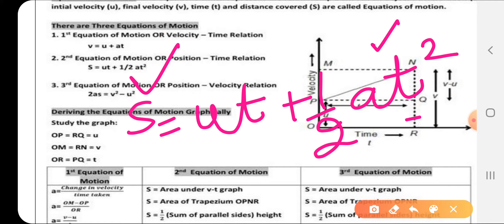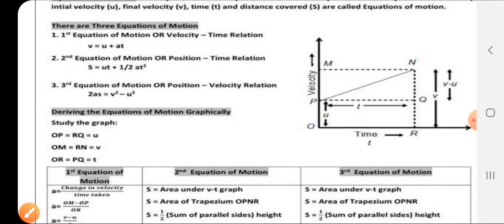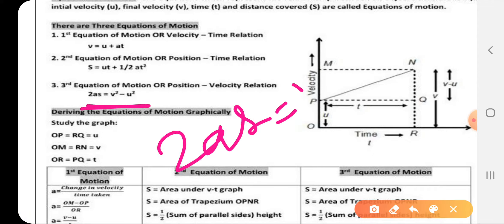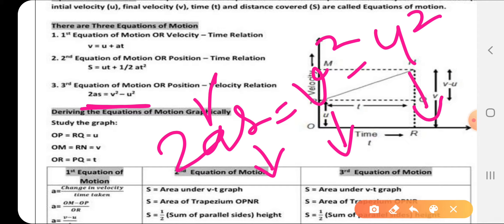The third equation is the position-velocity relation: 2as = v² - u². Here a is acceleration, s is distance, v is the final velocity, and u is initial velocity. Clear?